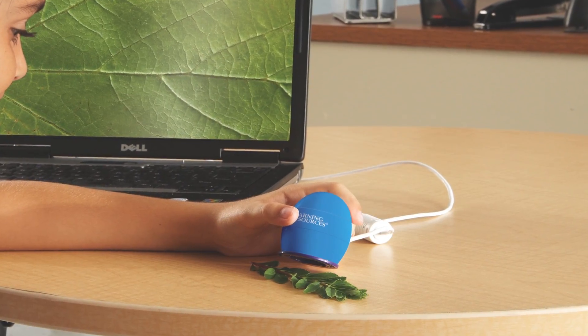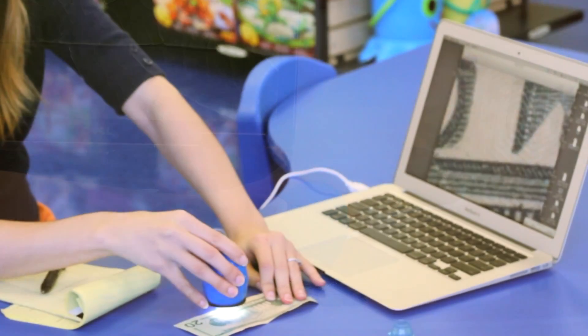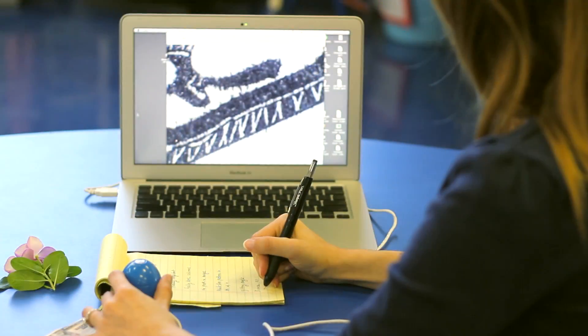Zoomie is just the right size for a child to hold with one hand, leaving the other hand free to manipulate objects or take notes.